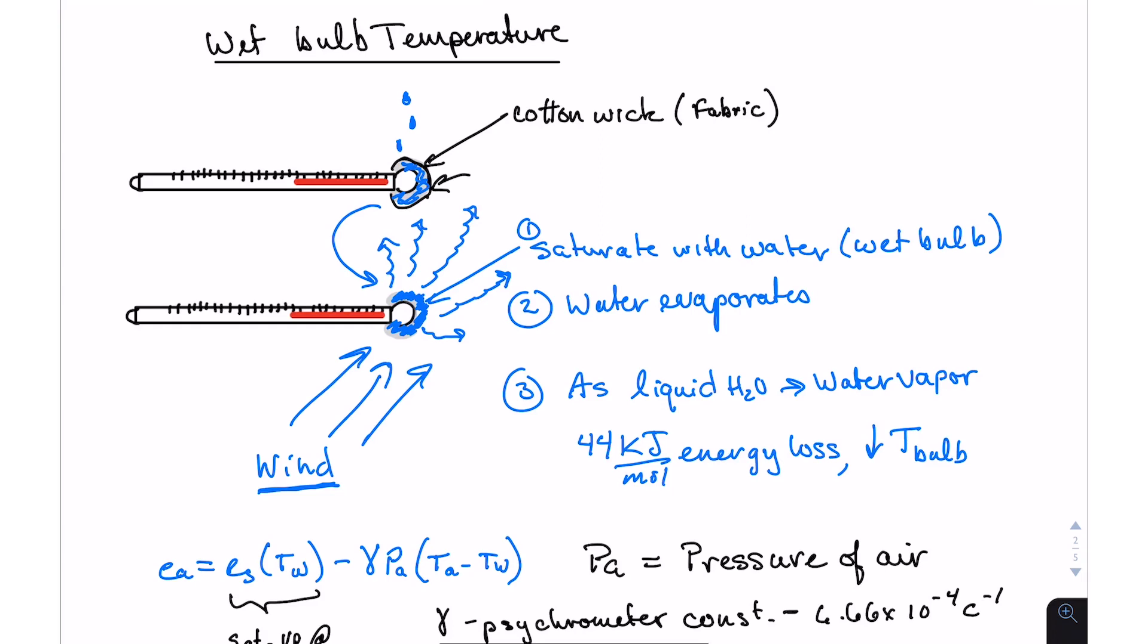Or more commonly, and maybe you've even seen this, you'd use a device with two temperature sensors that were attached on a rotating handle. So you'd spin these in the air. If you could get them going about one meter per second, so two miles an hour in the spin, I don't know how you'd ever estimate that, but that was the goal. That would help the water evaporate at an optimum level.